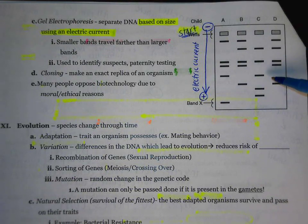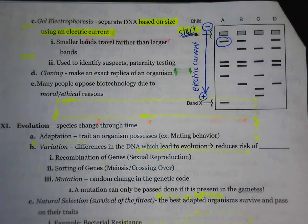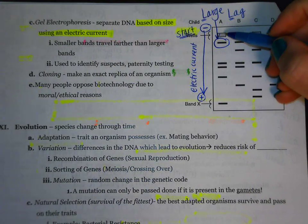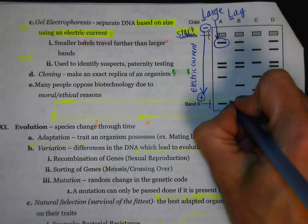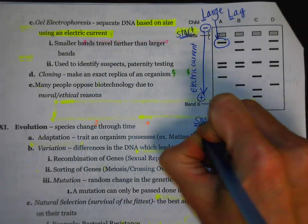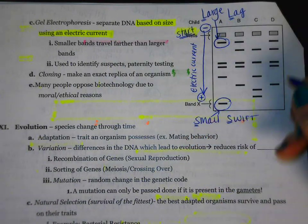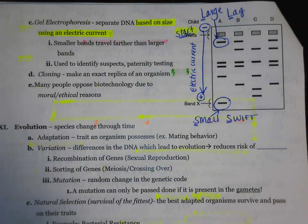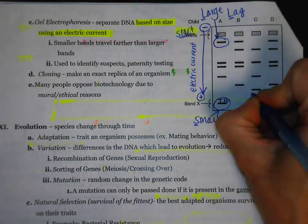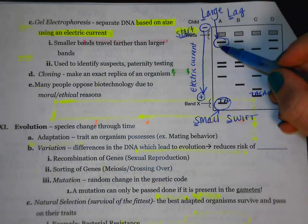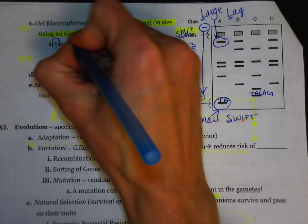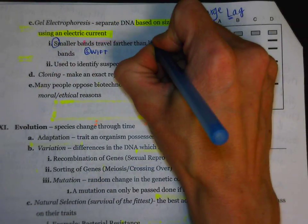Why are all of the bands in different spots? That has to do with the size of the band. The ones closest to the start are going to be the largest bands — the large bands are going to lag, meaning they stay closest to the starting gate. The band furthest away is going to be a small band — the small bands are swift and able to move very quickly. When I say large, I mean they have the most molecular bases; when I say small, I mean they have the least. Remember: small ones are swift, and the larger ones lag.